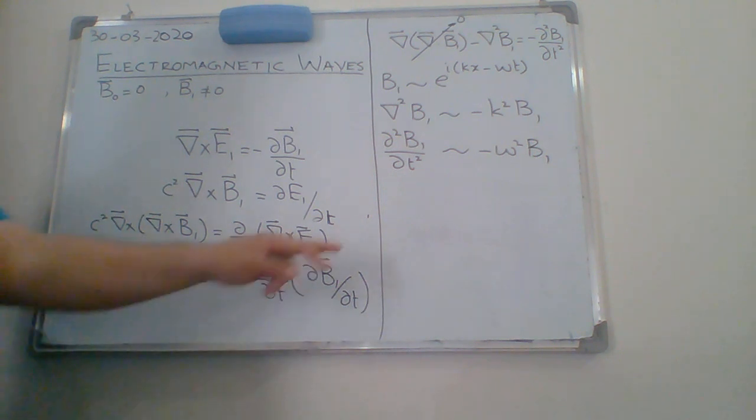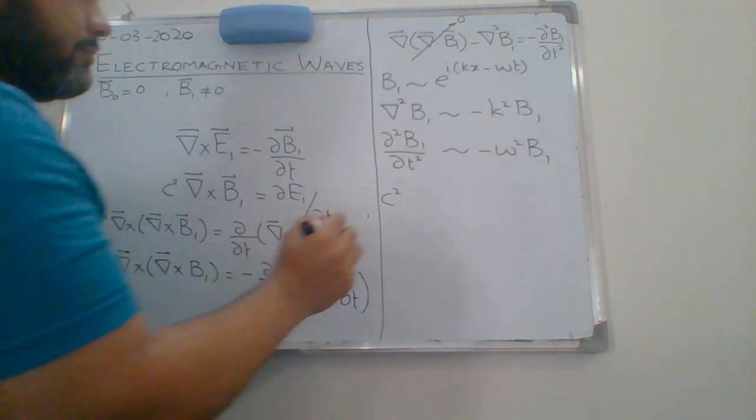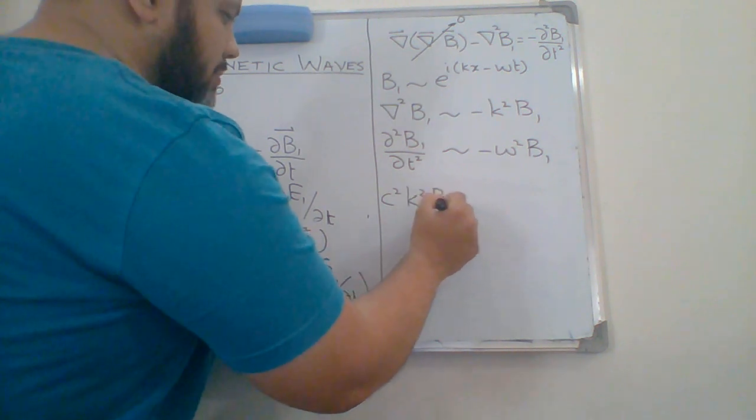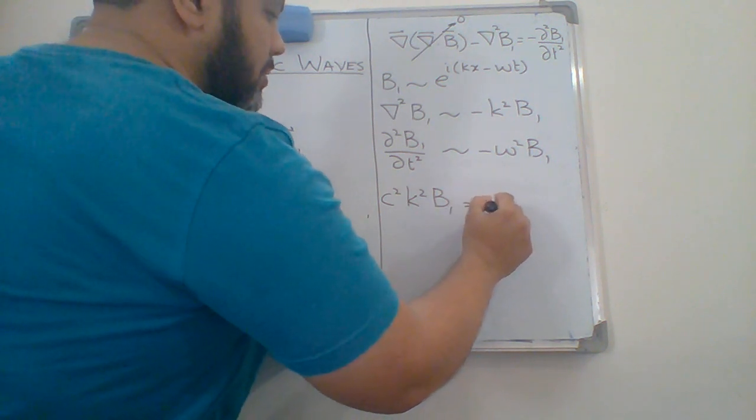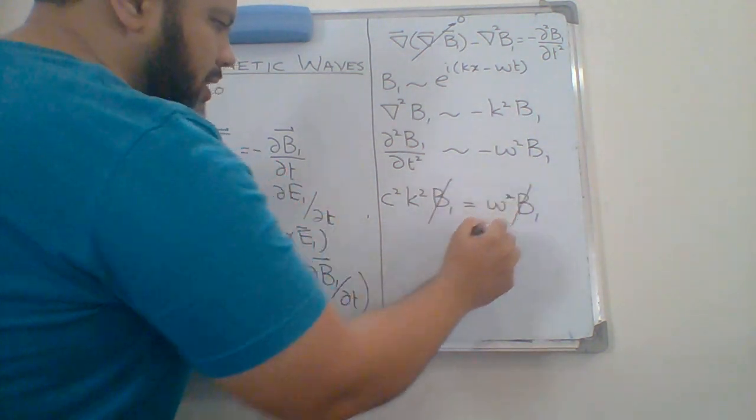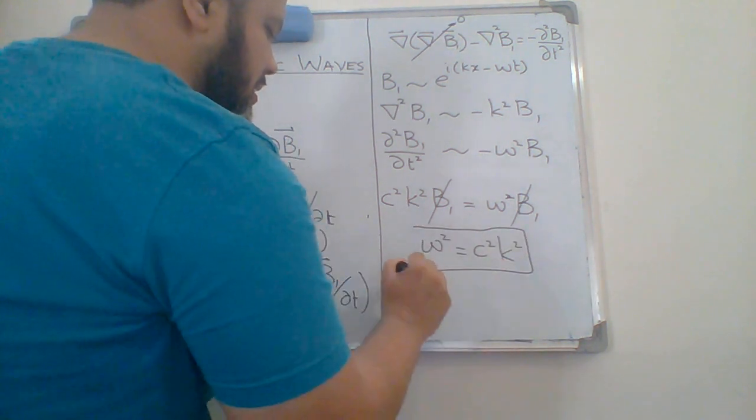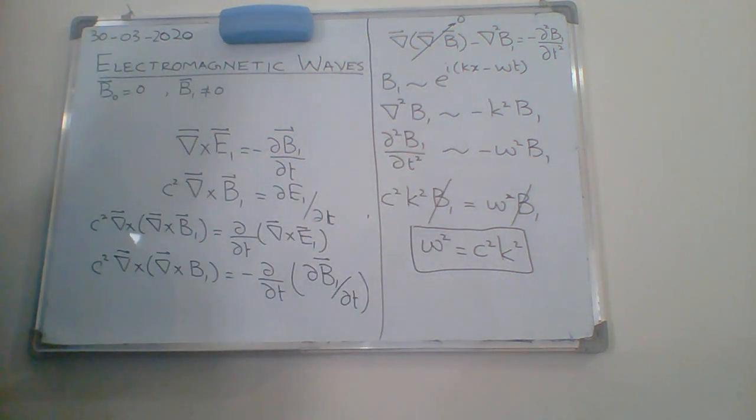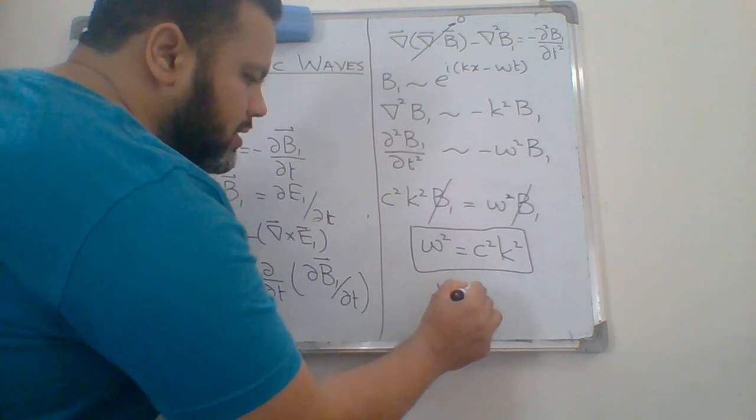Now substitute these values in this equation. I will get c square k square b1 equals omega square b1. So from here, as b1 is not equal to zero, omega square equals c square k square. This is the expression for the electromagnetic waves in vacuum. There is no contribution from any medium, so you are just seeing omega square equals c square k square, which can easily be written as omega by k equals c.